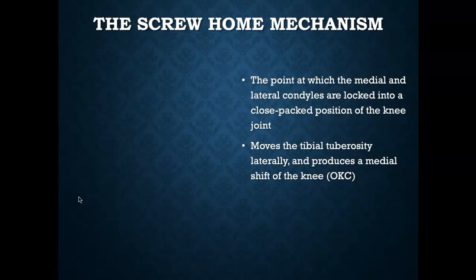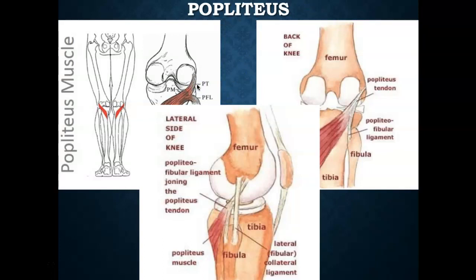Regarding the unlocking of the knee — which is arguably the most important aspect of the screw home mechanism — the popliteus is the key muscle. Its proximal attachment is to the lateral condyle of the femur and it attaches distally to the tibia. In the open kinetic chain, the popliteus is responsible for unlocking the knee by causing the tibia to rotate, moving the knee into a flexed position. In a closed kinetic chain, it's the external rotators at the hip that drive external rotation of the femur to unlock the knee.